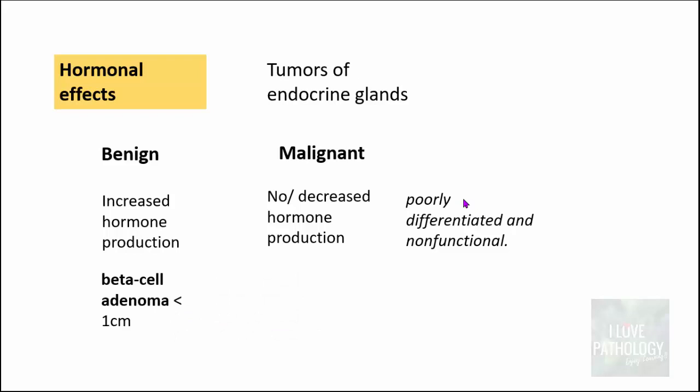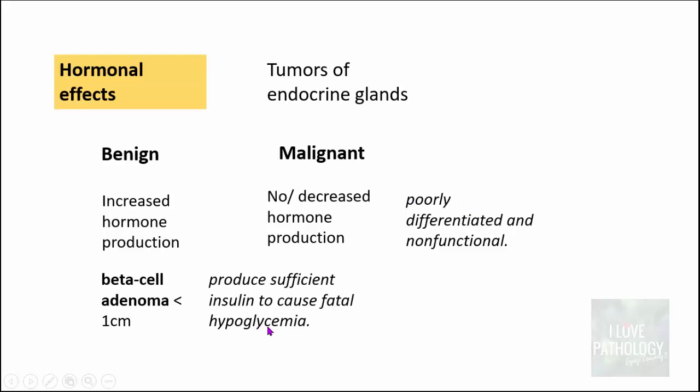For example, a small beta-cell adenoma of the pancreas — though it is less than one centimeter — can produce a significant amount of insulin, resulting in fatal hypoglycemia. So irrespective of whether the tumor is benign or malignant, it can result in death. The effect of neoplasia on patients does not depend upon whether it is benign or malignant; it depends upon the location and the hormone being produced.